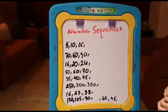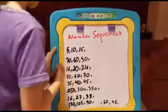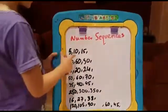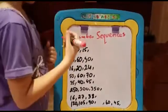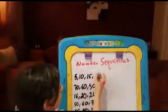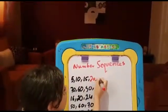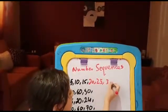To complete the sequence you will need to find the rule. Now here we have 5, 10, 15. The rule is adding 5. Now the next three numbers are 20, 25, and 30.